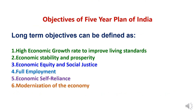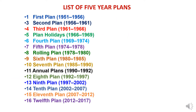The long-term objectives of Five-Year Plans of India can be defined as: first, high economic growth rate to improve living standards; second, economic stability and prosperity; third, economic equity and social justice; fourth, full employment; fifth, economic self-reliance; and sixth, modernization of the economy. These are the long-term objectives to be fulfilled by the Five-Year Plans of India. Here we have presented the list of Five-Year Plans implemented from 1951 to 2017. Till now, 12 Five-Year Plans have been implemented, and in between, in interim terms, there were some annual plans and plan holidays. We will discuss each plan in detail.